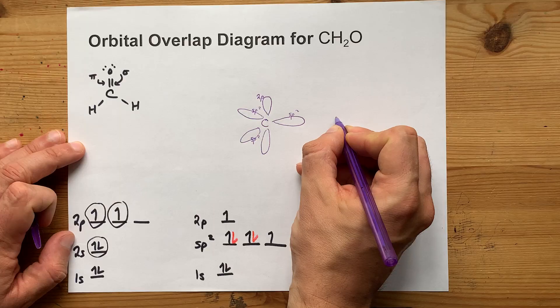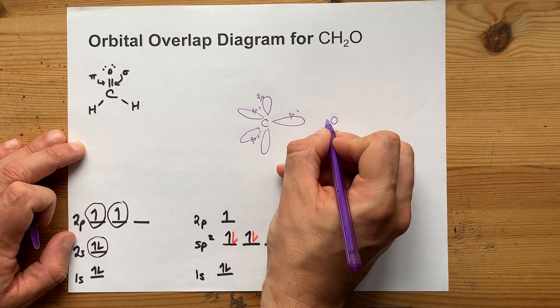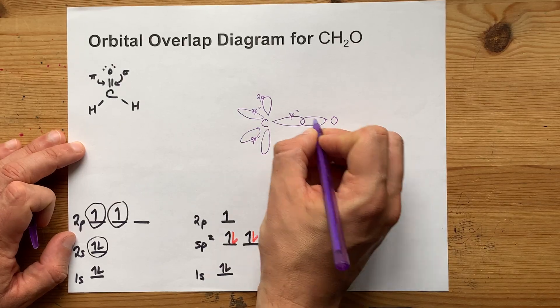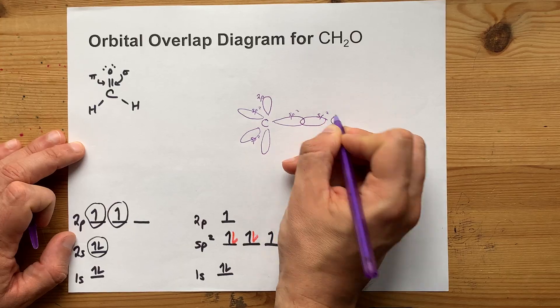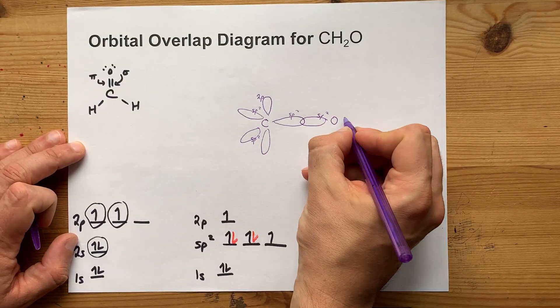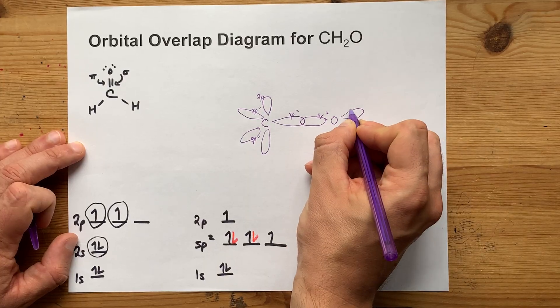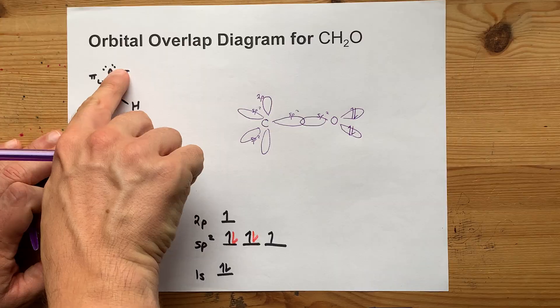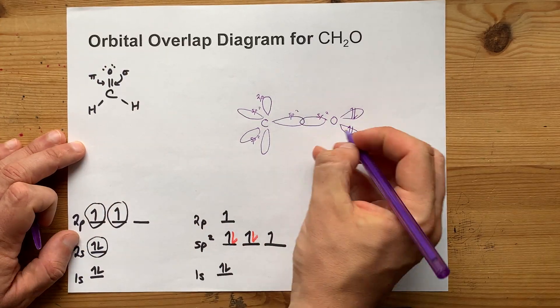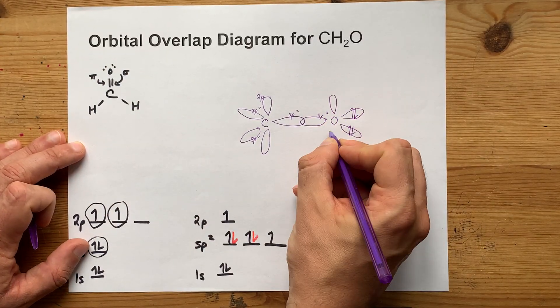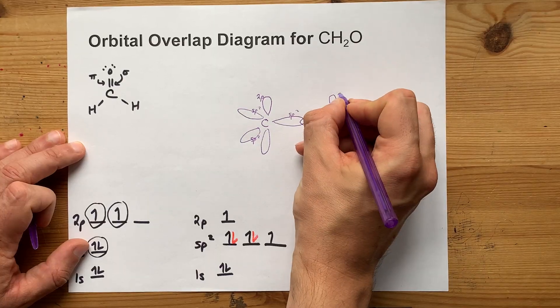Oxygen is actually hybridized the same way. You need one sigma bond. That is an sp² hybridized orbital. You actually still have two extra hybridized orbitals, but they have lone pairs inside. See? And oxygen also has a 2p orbital left over. There it is.